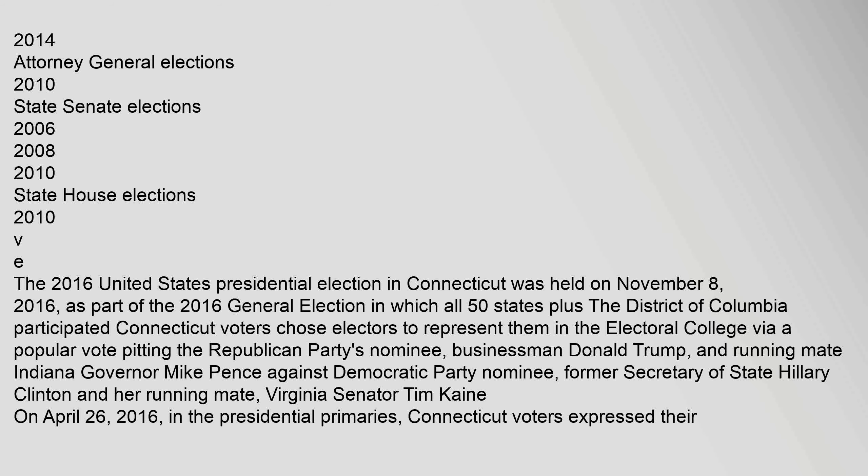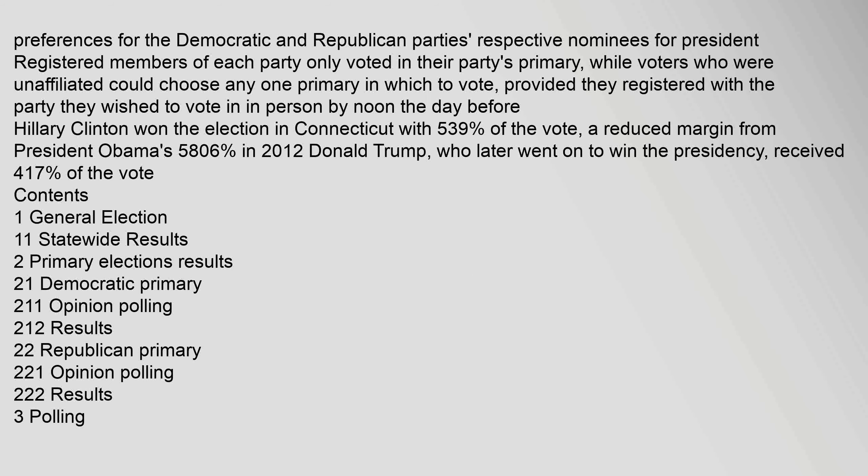The election pitted the Republican Party's nominee, businessman Donald Trump, and running mate Indiana Governor Mike Pence, against Democratic Party nominee former Secretary of State Hillary Clinton and her running mate, Virginia Senator Tim Kaine. On April 26, 2016, in the presidential primaries, Connecticut voters expressed their preferences for the Democratic and Republican Party's respective nominees for president. Registered members of each party only voted in their party's primary, while unaffiliated voters could choose any one primary, provided they registered with the party by noon the day before.